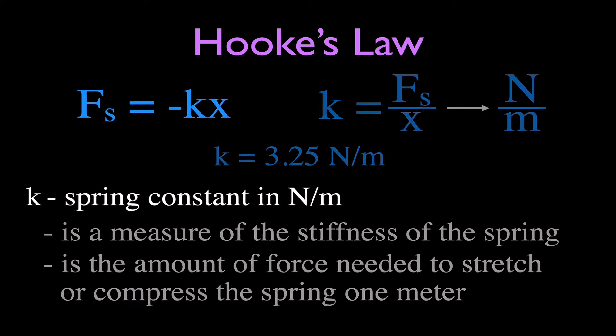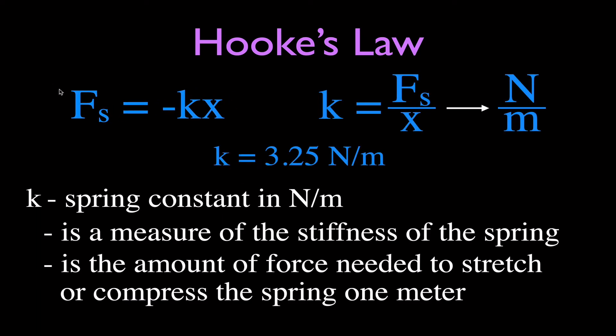Now, what about the spring constant? If we solve Hooke's Law for k, leaving off the minus sign, we get that the spring constant equals the force divided by the change in length. Force is in newtons, change in length is in meters, so the units for the spring constant are newtons per meter. For example, a spring with a spring constant of 3.25 N/m would take 3.25 newtons to change its length by one meter.